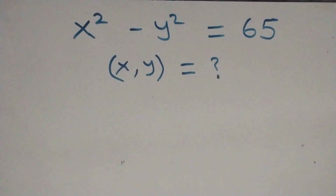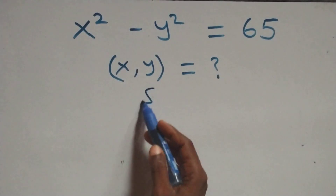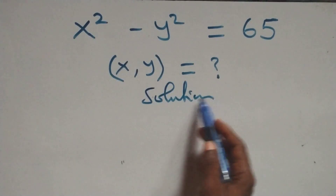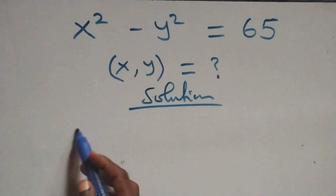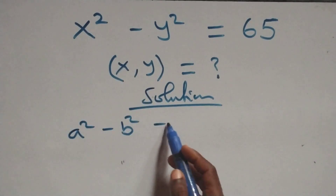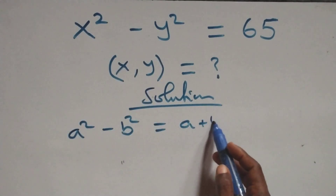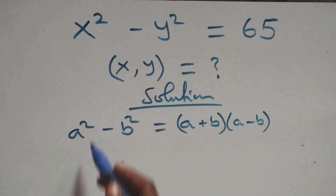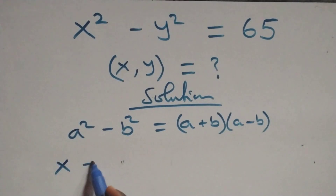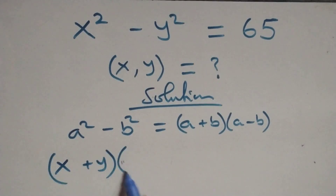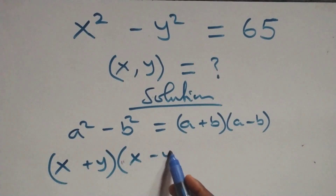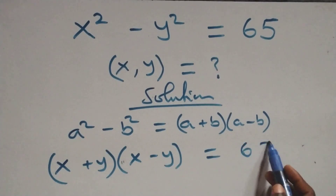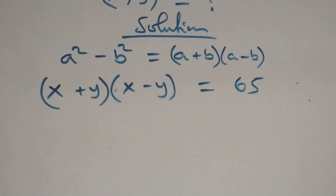Hello y'all, welcome. We are solving a nice algebraic equation. What we have is a squared minus b squared, which can be written as (a+b)(a-b). Applying this identity, the expression becomes (x+y)(x-y), which equals 65.